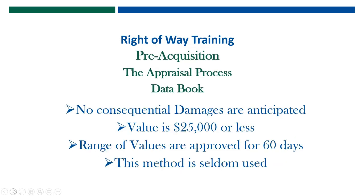The data book is a little different, but the process is similar to the cost estimate. Number one, no consequential damages are anticipated. If you have to ask the question, 'I wonder if there are any damages on this property,' then you cannot use the data book. Also, the value has to be less than $25,000 in order to use it.